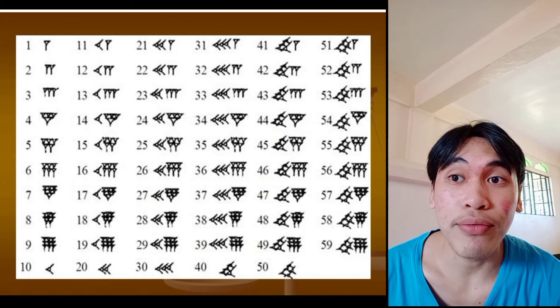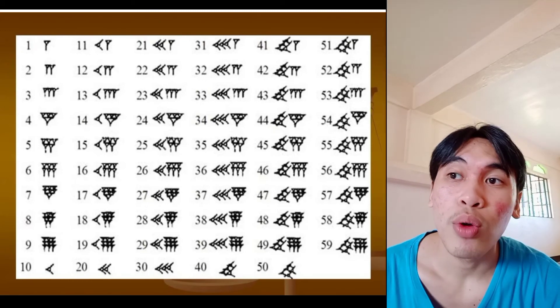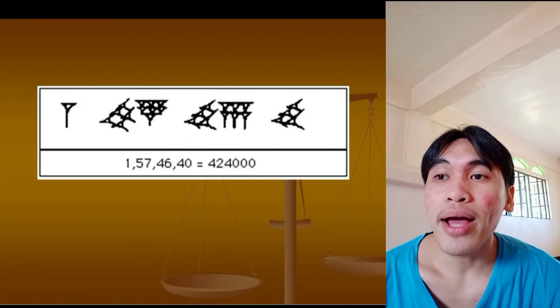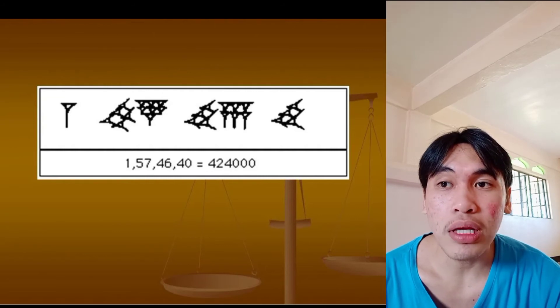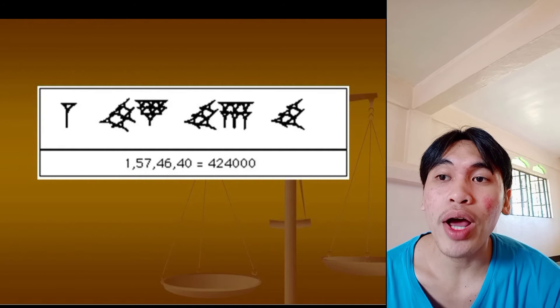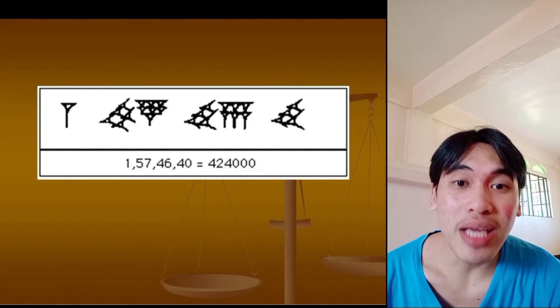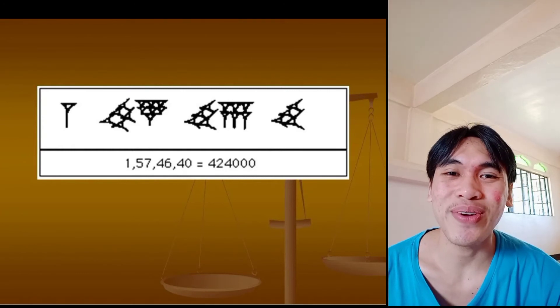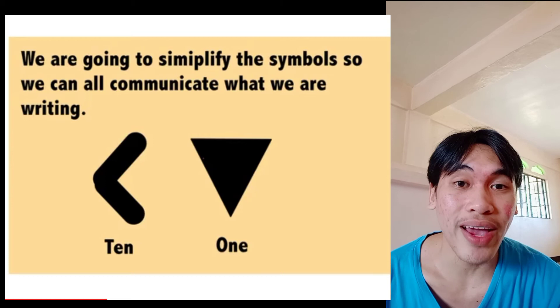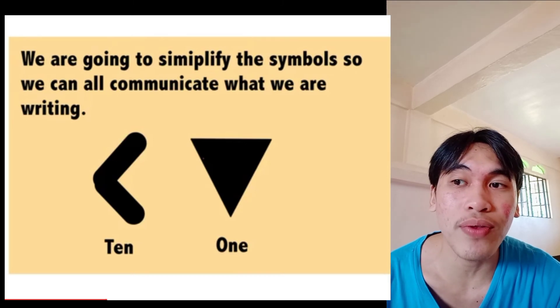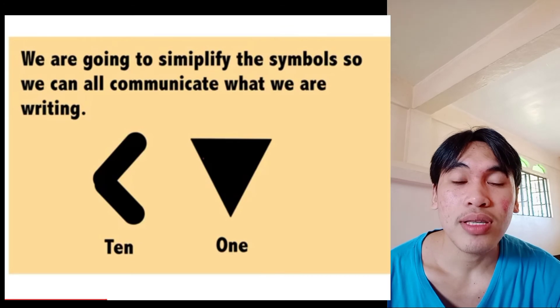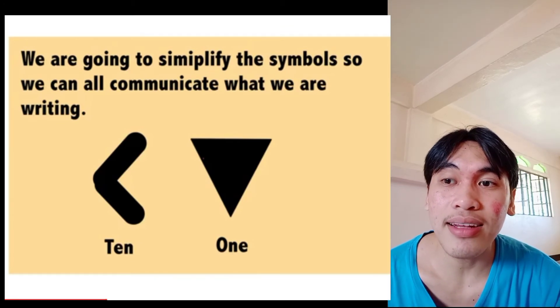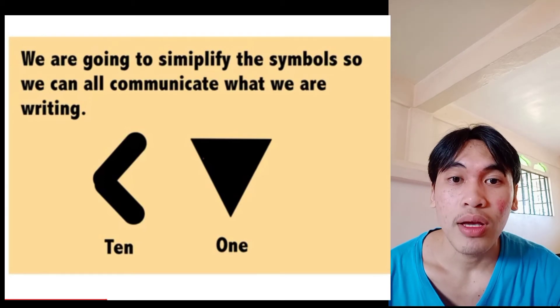They only have two numeric symbols, which is the 1 and 10. Like, for example, this one. It is 157, 46, 40 is equal to 424,000. How come did they do that? Let me explain for you. Here we go. That is something confused. We are going to simplify the symbols. We can communicate that we are writing 10 as something less than, and 1 is a downward triangle.